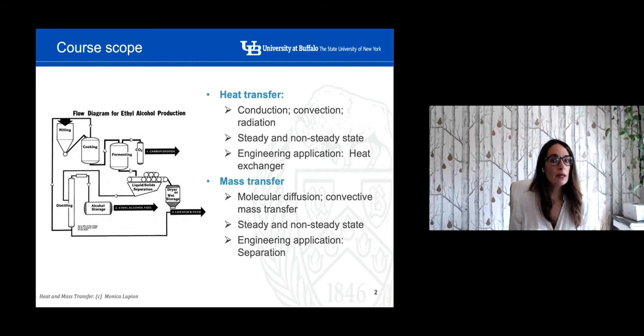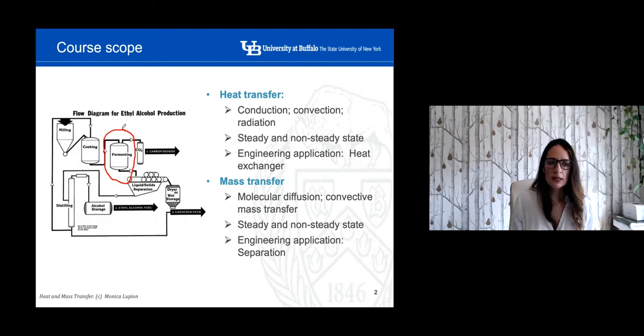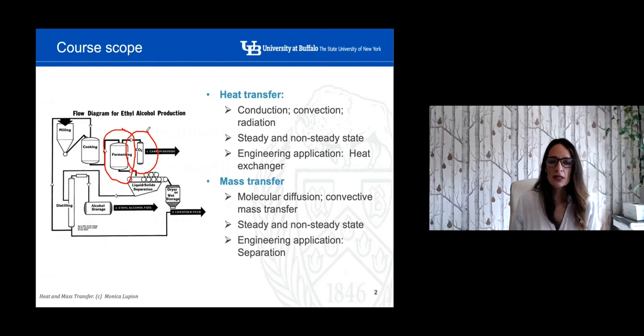This is an example — the flow diagram for ethyl alcohol production. You can see for example the fermenting tank where mass transfer is happening but also heat transfer, because there is a variation of temperature. You see as well in the CO2 unit to capture CO2 the same thing. So it's very common to have both mechanisms happening at the same time, but in most cases you can try to solve heat transfer on one side and mass transfer on another.